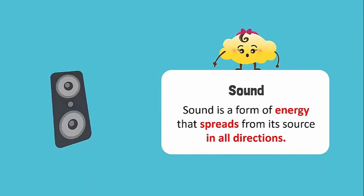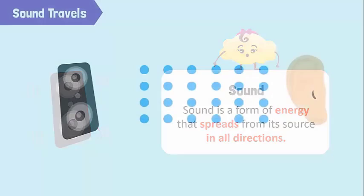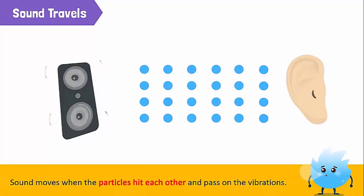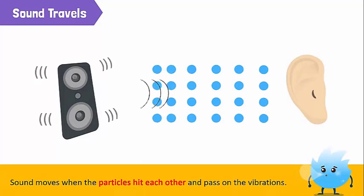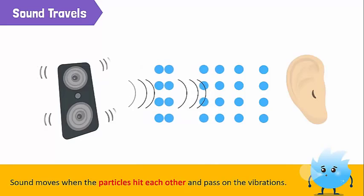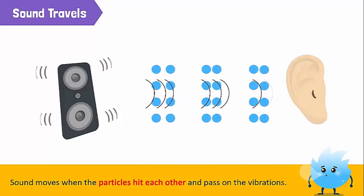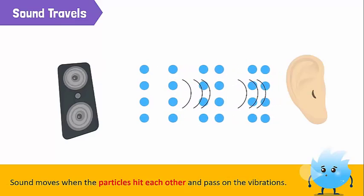Sound is a form of energy that spreads from its source in all directions. We hear sound when vibrating particles hit our eardrum. Sound moves when the particles hit each other and pass on the vibrations.